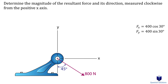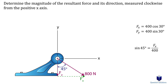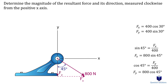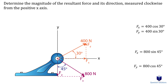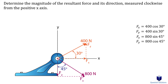Now let's focus on the 800 newton force. Let's draw the components first. For the x component, notice how with the 45 degree angle given, the x component is actually opposite to the angle, which means we need to use sine. Next, the y component — this time it's the adjacent length, so we need to use cosine. The next step is to sum all of the x-axis components and the y-axis components.